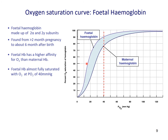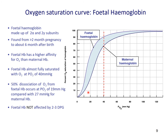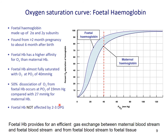Half of the fetal hemoglobin is saturated at about 19 mmHg PO2, while the same is about 27 mmHg for maternal hemoglobin. The fetal hemoglobin is almost fully saturated at 40 mmHg PO2, while maternal hemoglobin is only 75% saturated at that level. Fetal hemoglobin is not affected by the binding of 2,3-DPG, because one amino acid on the gamma subunit of HbF is mutated so it does not bind these substrates. Overall, fetal hemoglobin provides efficient gas exchange between mother's blood and fetal tissues.